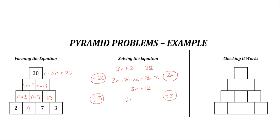3n divided by 3... well, 12 divided by 3 is 4. 3n divided by 3 is just n. So we think that n is